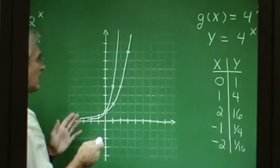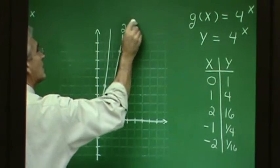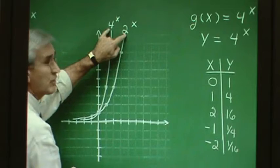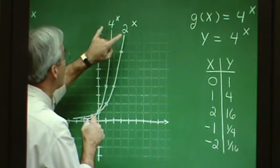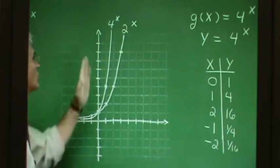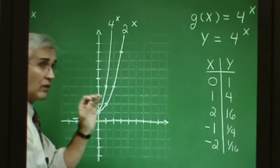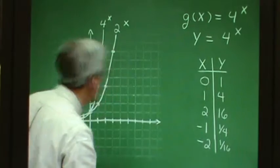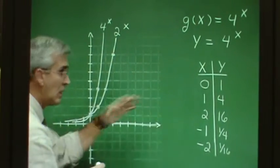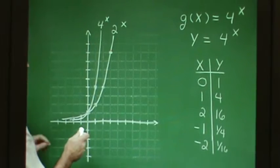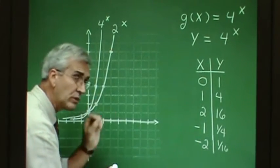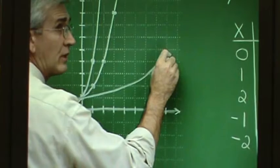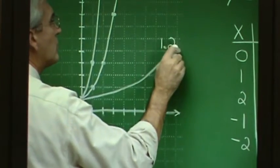Comparing the graph of 2^x with 4^x, we notice that as the base of the exponent gets larger, the graph rises more sharply. Conversely, as the base gets smaller and approaches 1, the graph tends to flatten out. For example, the graph of y equals 1.2 to the x power would be a gently rising curve.